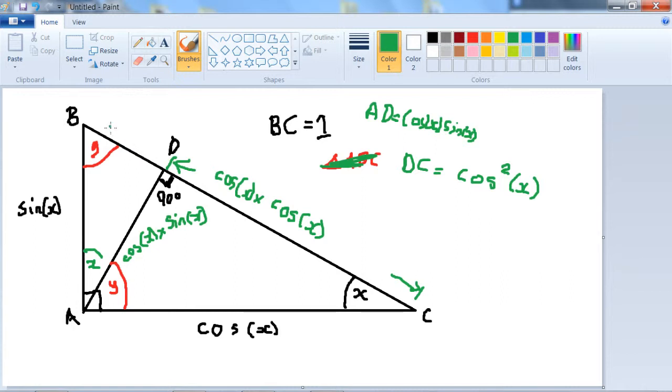So let's now try and work out this length here. Well we know actually that BC is equal to 1, so BD is equal to 1 minus cos squared X. But we can also start with this triangle if we look at the triangle ABD and let's draw it again.